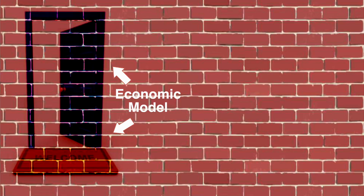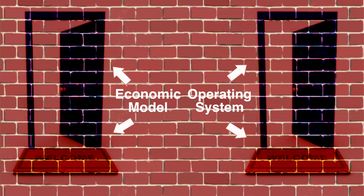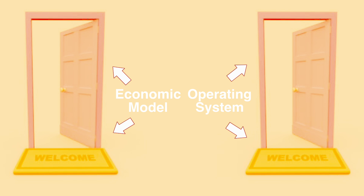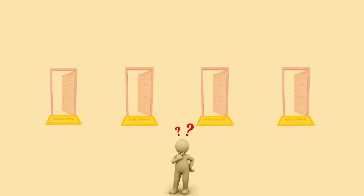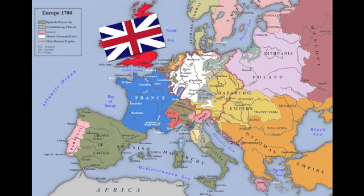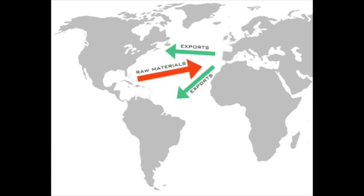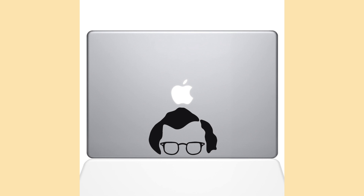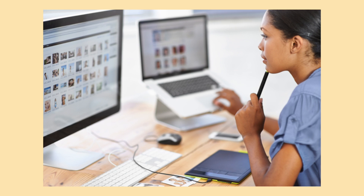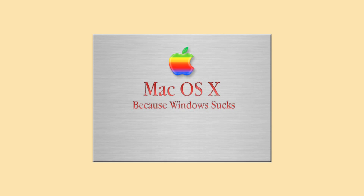I think both choosing an economic model and a computer operating system probably come from precisely the same motivations. Societies wound up using an economic model like mercantilism because of the advantages or efficiencies they thought it might give them — just like a designer is more likely to use a Mac over Windows.